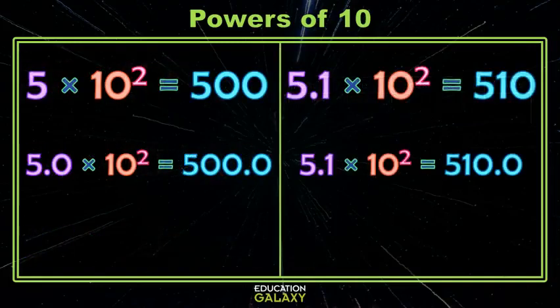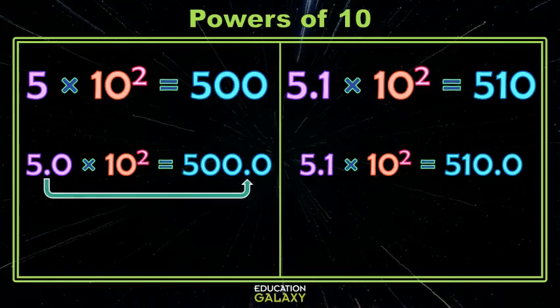So if I look at these two examples side by side, do you notice anything they have in common? When I had 5 times 10 to the second power, my decimal, which was invisibly after the 5, has now magically moved to after these two 0's. And when I had 5 and 1 tenth, and the decimal was between the 5 and the 1, now it's magically between these two 0's.